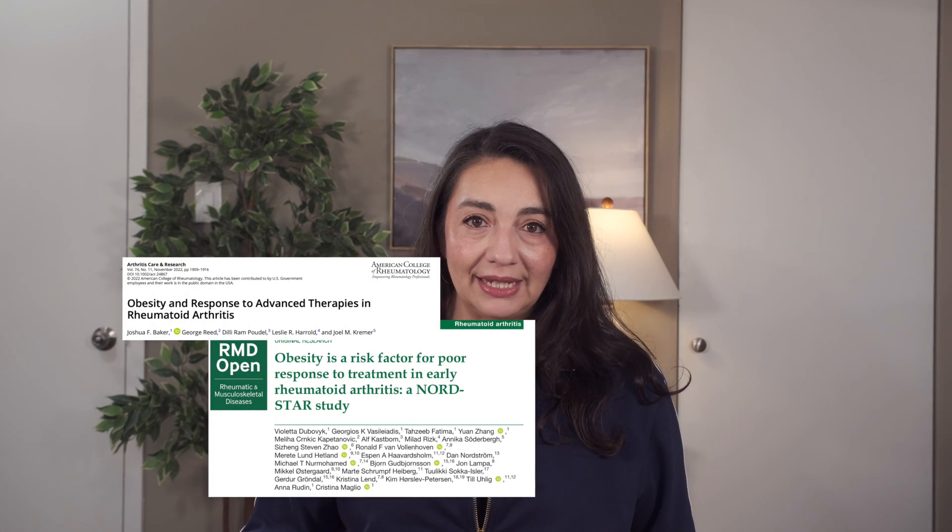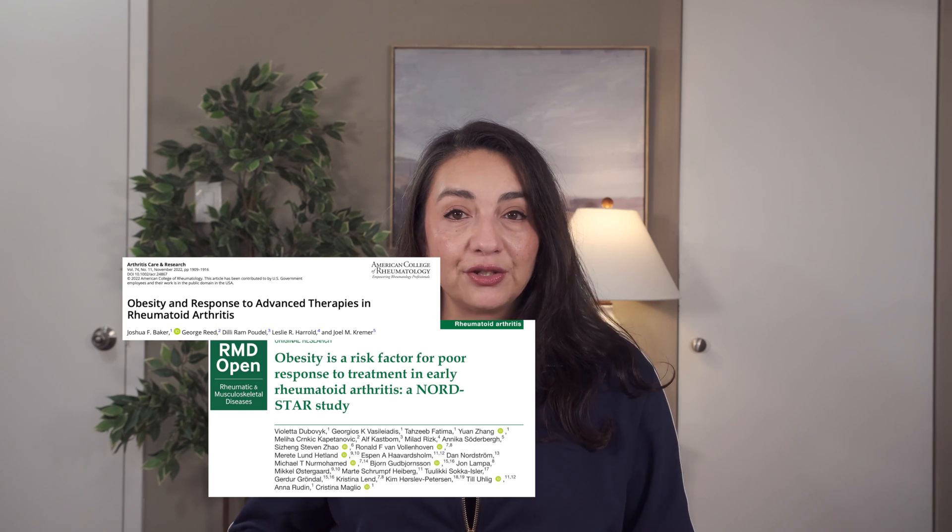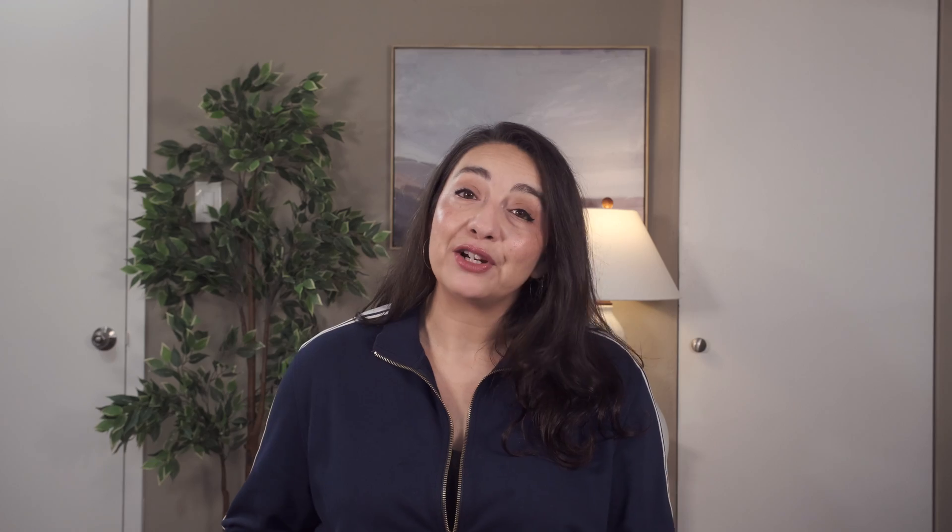Rheumatoid arthritis patients with obesity have poor responses to their treatments, including the fancy biologics. Plus, we know that autoimmune disease leads to an increased risk of cardiovascular disease — meaning a higher risk of heart attacks and strokes. It has long been thought that this is the result of long-standing inflammation, and the best way to protect against those heart attacks and strokes is to get your inflammation under control today. Getting your autoimmune disease in remission, or as close to it as possible, provides the best protection to your heart and brain long term.